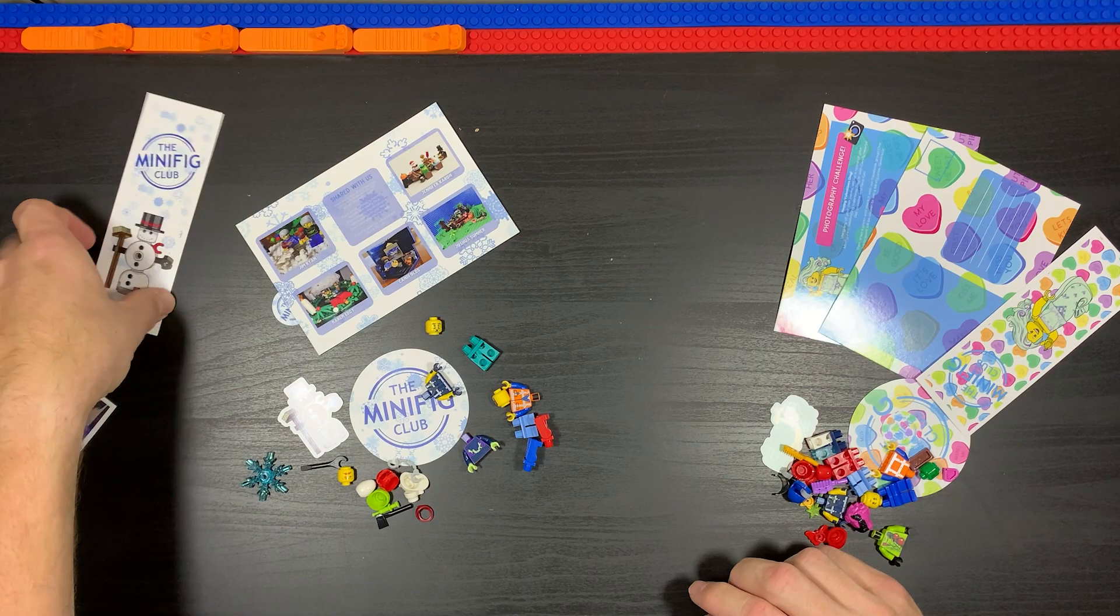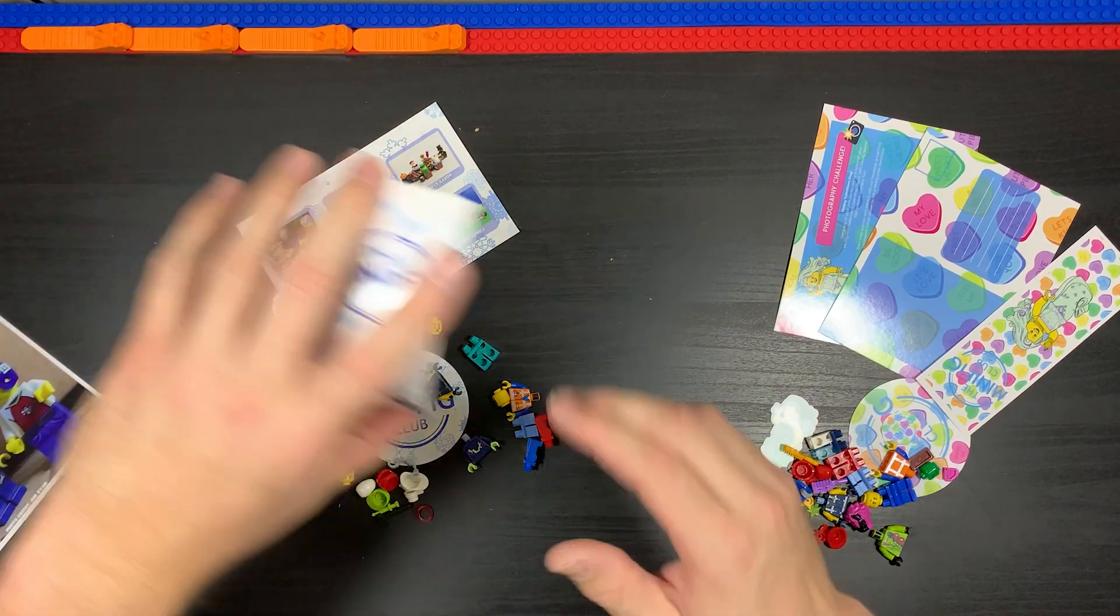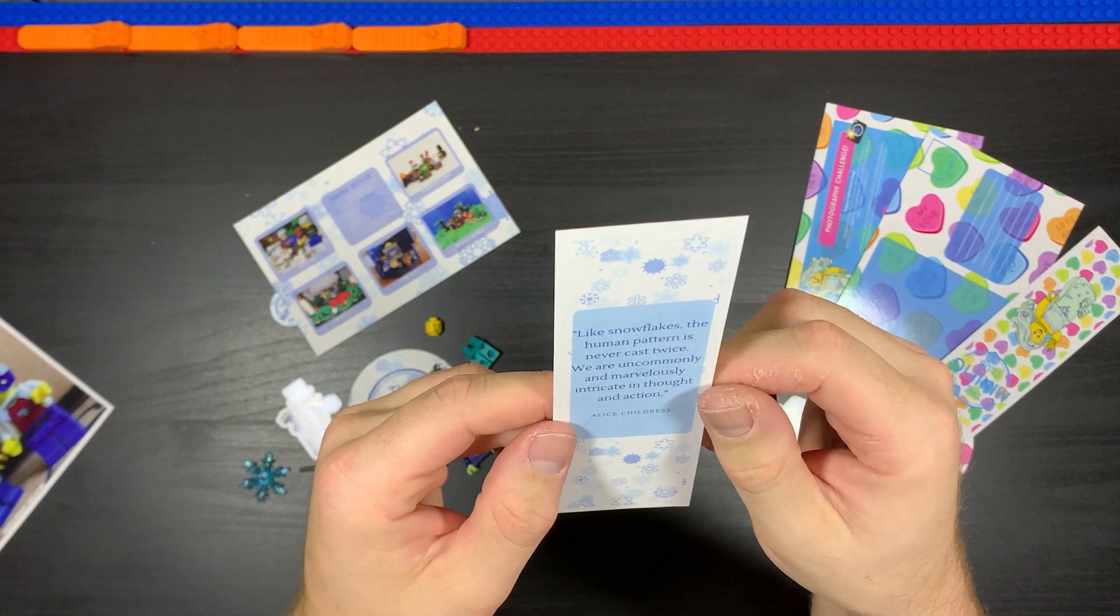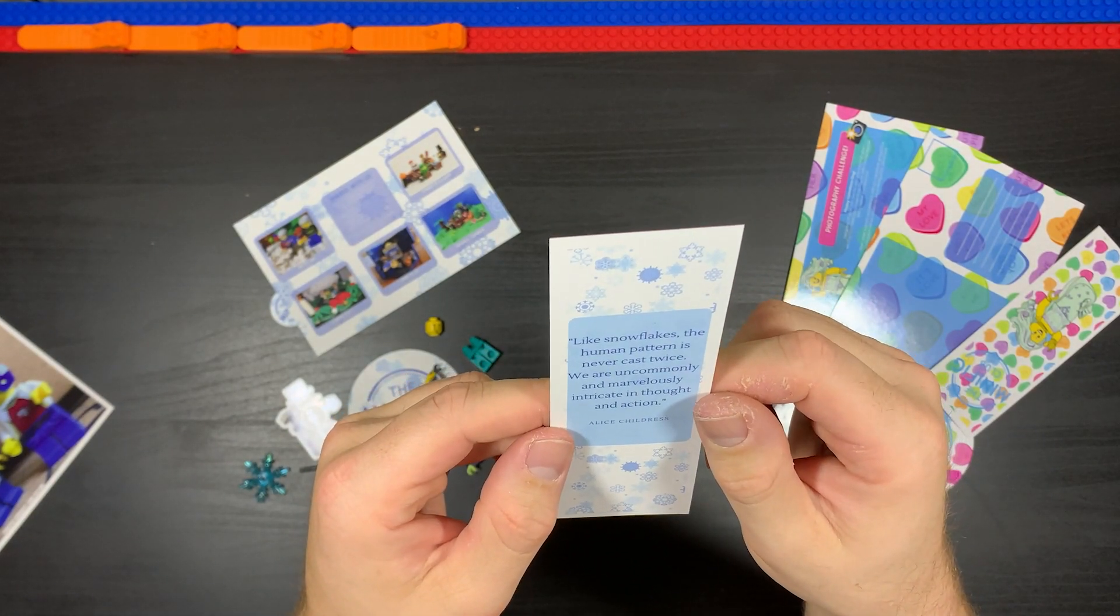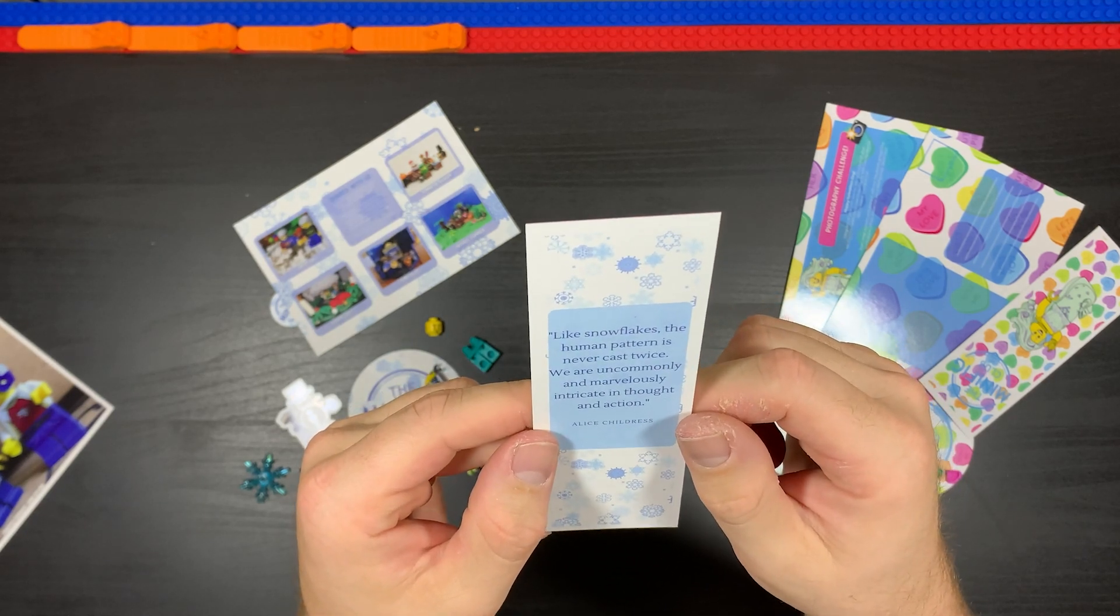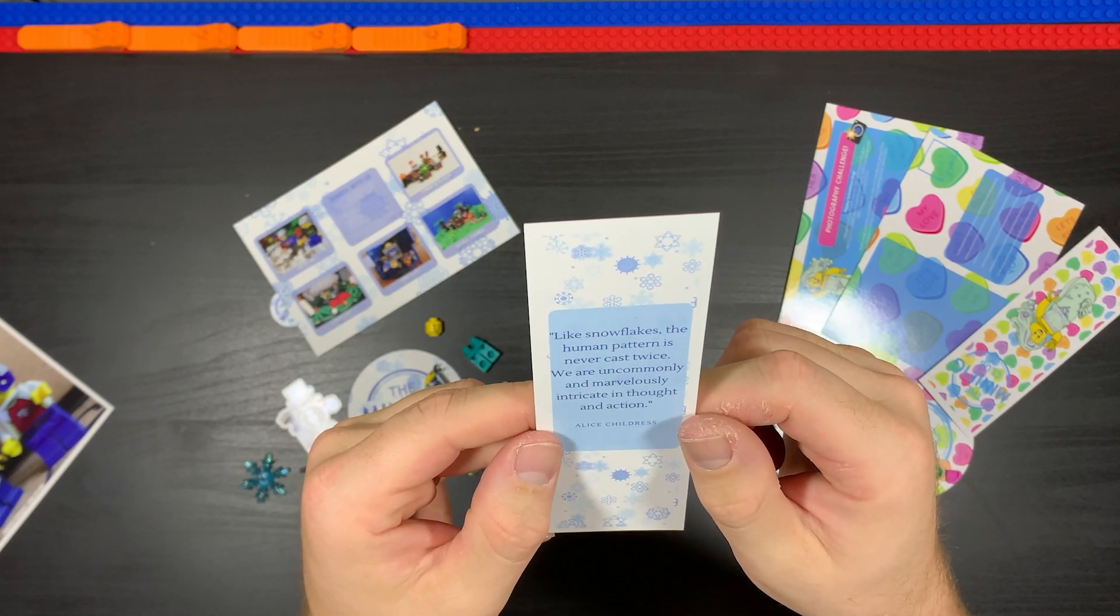We got ourselves a bookmark with a snowman on it. This one says, 'Like snowflakes, the human pattern is never cast twice. We are uncommonly and marvelously integrated in thought and action.' This was a quote by Alice Childress.